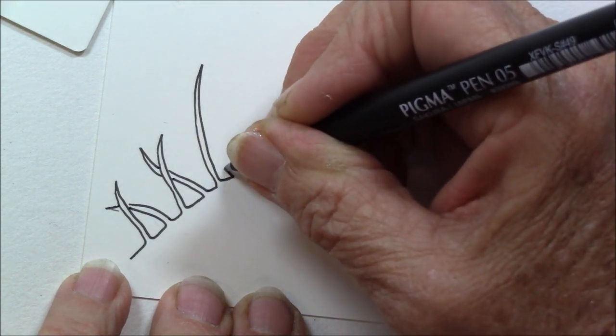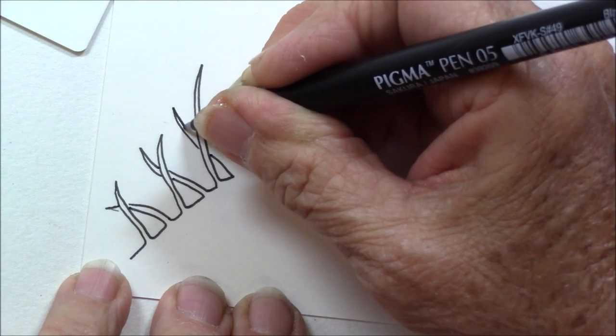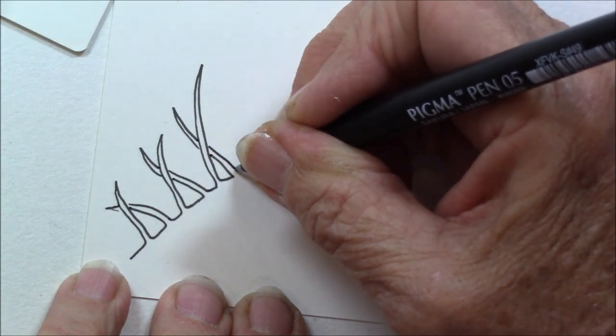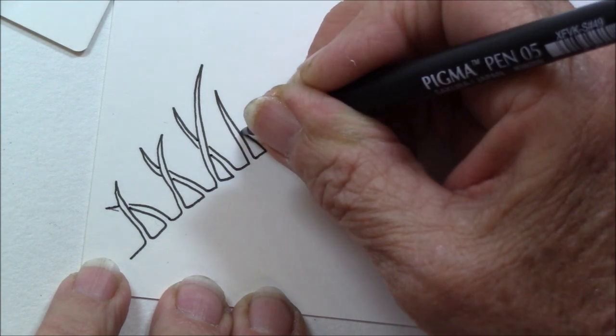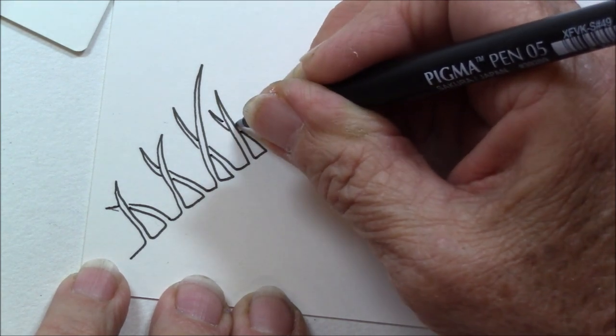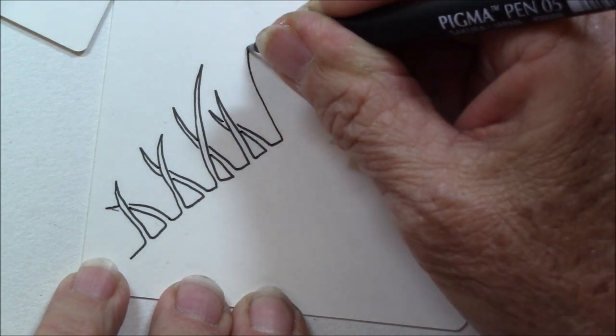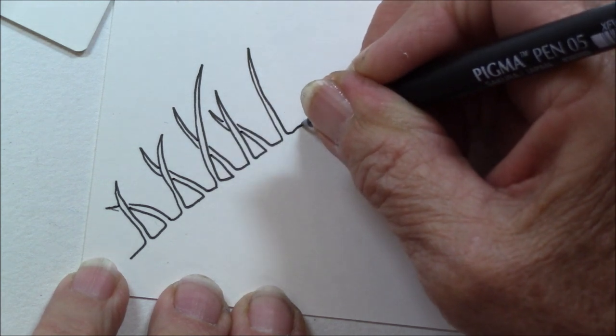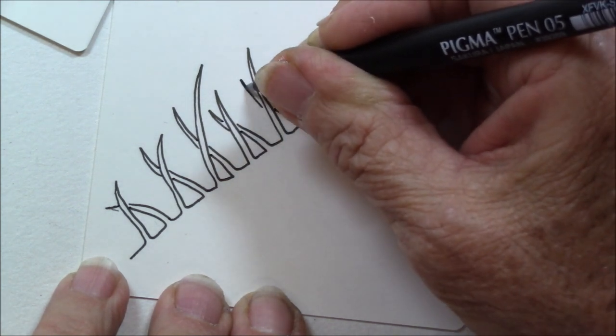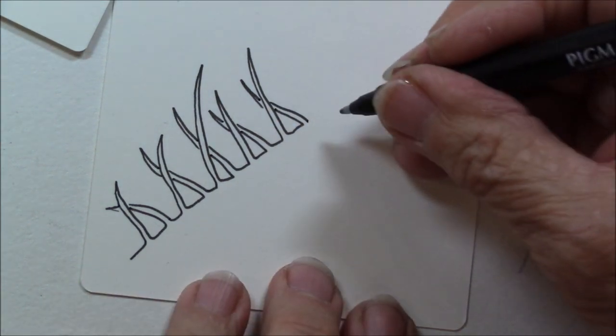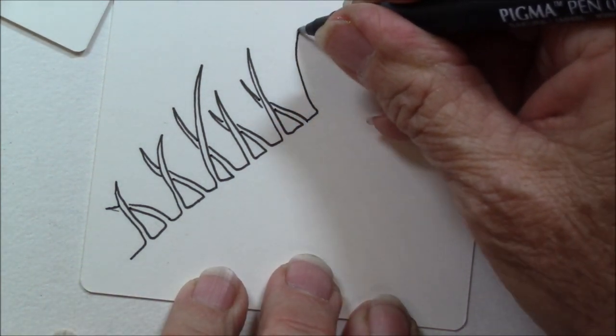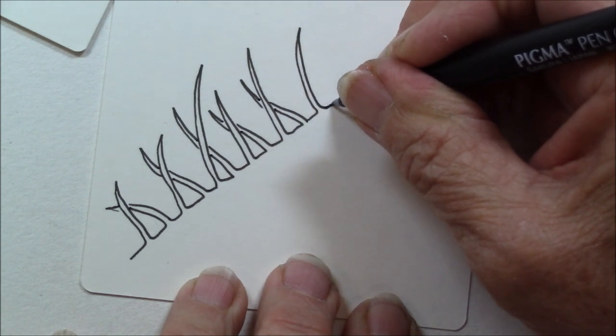And they can be short, they can be long. So you're just traveling up a line. Almost looks like maybe blades of grass.